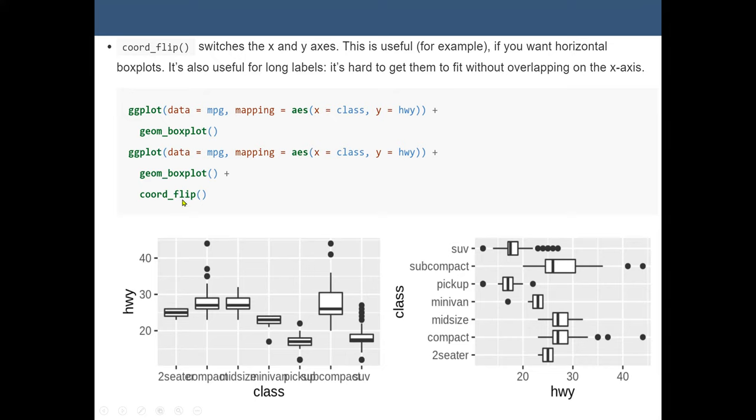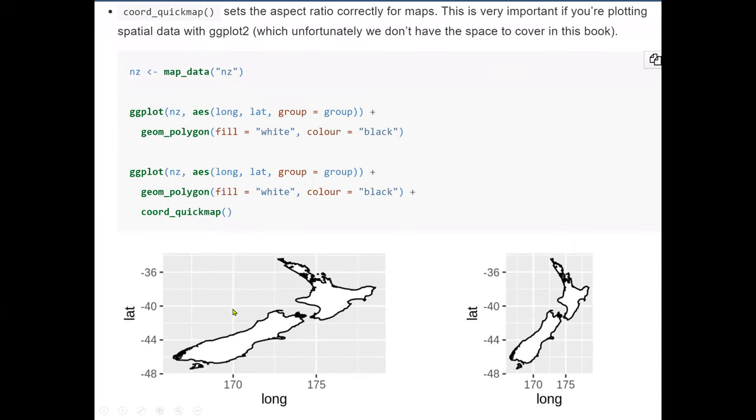But now we want to use coord_flip to change the axis. So here we still have the ggplot, the data mpg, the X still the class, and the Y still the highway. And we plot the boxplot. This time we use coord_flip to flip the X and Y. So you can see in the first graph we have highway as Y axis. But in the second, the highway becomes the X axis. So here we can use the coord_flip function to change or to switch the X and Y axis.